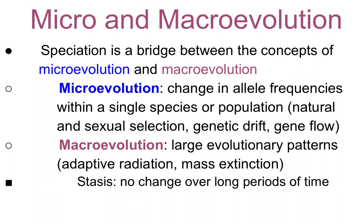Micro and macro evolution. Speciation is the bridge between the concepts of micro and macro evolution. Micro evolution is change in allele frequency in a single species or population — natural selection, sexual selection, genetic drift, etc. Macro evolution refers to large evolutionary patterns such as adaptive radiation, mass extinction, and stasis, where there is no change over very long periods of time.